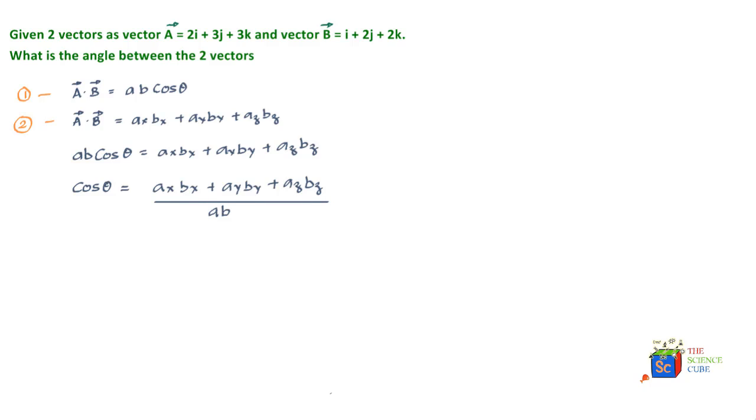Now with this information, let's see what vectors we have here. Vector A is equal to 2i plus 3j plus 3k.